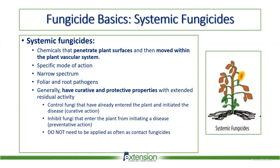Systemic fungicides are where a lot of turfgrass fungicides are moving. They typically have a more specific mode of action and are more narrow-spectrum, which makes it easier to get them through the EPA process and labeled for use on turf and other crops. They penetrate plant surfaces and move within the vascular tissue. They can be used against foliar and root pathogens and generally have a combination of curative and protective properties with extended residual activity. They can control fungi that have already entered the plant and initiated infection, as well as inhibit new fungi from initiating disease.